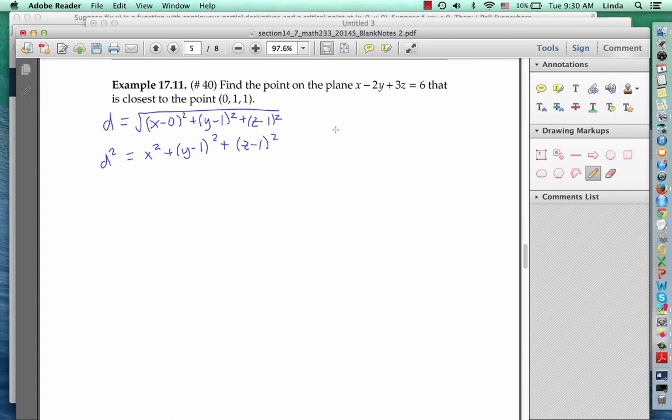Since we know that x, y, z has to lie on this plane, we know that x has to equal 6 plus 2y minus 3z. So plugging that into this equation for distance, we get the distance squared is 6 plus 2y minus 3z squared plus y minus 1 squared plus z minus 1 squared. And this is our function of two variables, y and z, that we want to minimize.